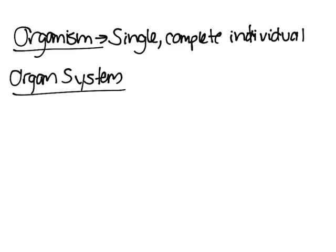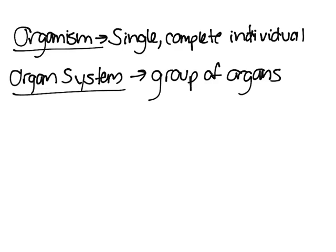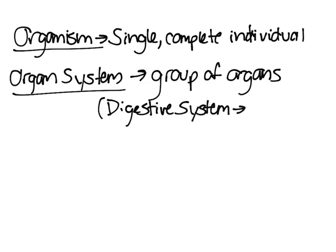An organ system is a group of organs that together essentially helps produce a certain function. For example, the digestive system — all of the organs help you digest food.